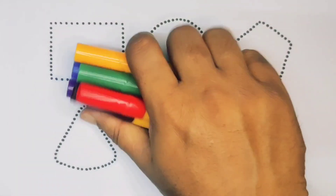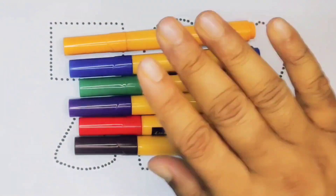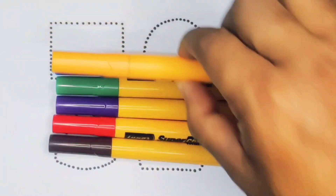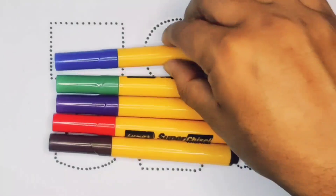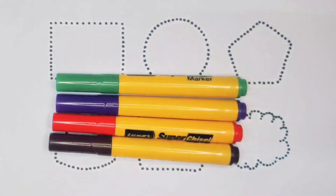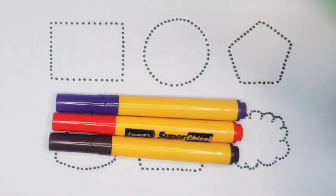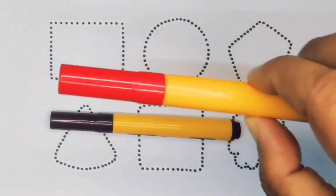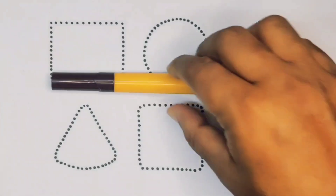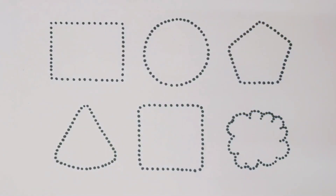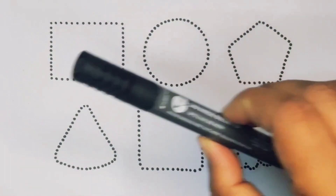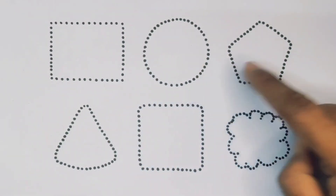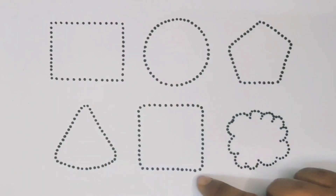Hello kids, welcome to my new video! First, we're going to learn the color names: orange, blue, green, purple, red, chocolate, and black. Now let's learn the 2D shapes: rectangle, circle, pentagon, triangle, square, and cloud.